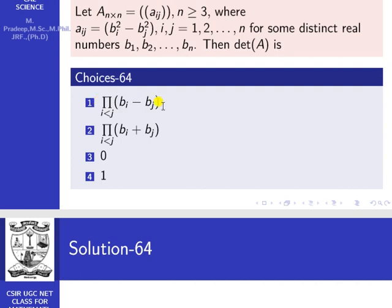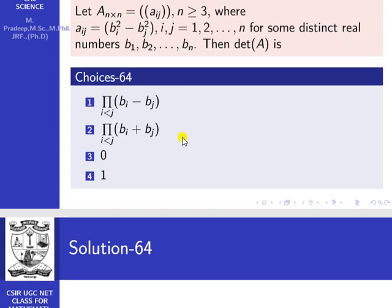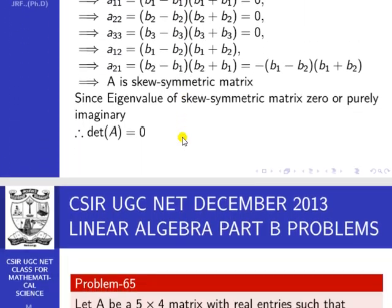Since bi minus bj and bi plus bj are real products, the possibility of getting one is not there. So for some distinct real numbers, the determinant of A may be equal to 0. Option 3 is correct.